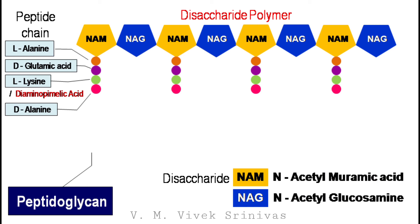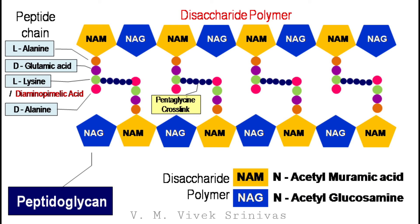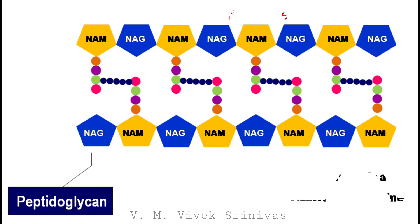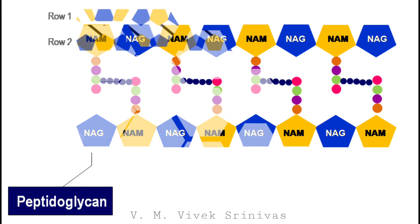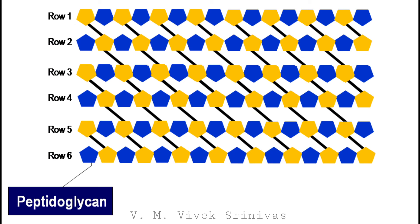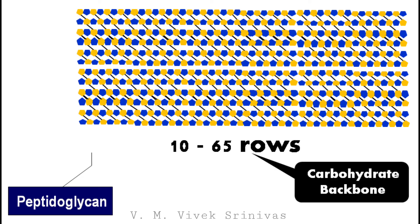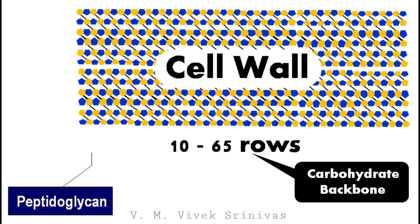These disaccharide polymers are arranged in rows, which are linked to each other by the pentaglycine crosslink between L-lysine and D-alanine. These disaccharide polymers are arranged in many rows, linked to each other by the pentaglycine crosslink, to form a carbohydrate backbone. There may be 10 to 65 rows to form this carbohydrate backbone. This forms the complex structure that is the cell wall of the bacteria.